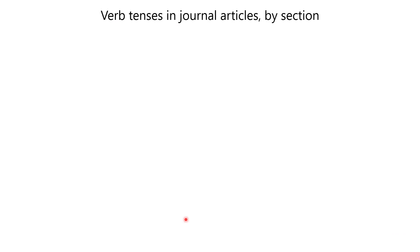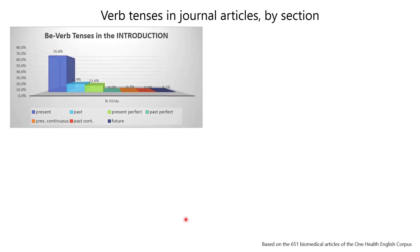Now I would like to show you some data — verb tenses in journal articles by section, starting with the introduction. In this chart, I have used the be verb tenses as a substitute for all verbs. The general trend is the same whether we use only be verbs or all verbs. The x-axis represents different verb tenses shown by color, and the y-axis represents percentage of coverage of each tense within the section — in this case, the introduction.